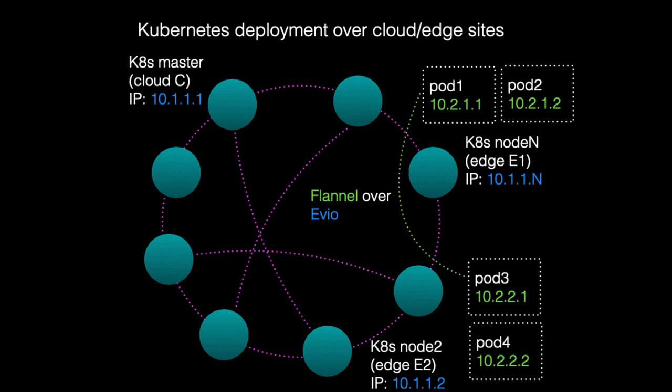Each node gets a private address in the EVO address space. Once the Kubernetes cluster is bootstrapped, you can deploy pods, which also have virtual private addresses communicating over the Flannel overlay namespace. All of this is transparent to the applications running in the pods and to the Kubernetes middleware. Nodes can join and leave the cluster dynamically, and EVO reconfigures the network appropriately.